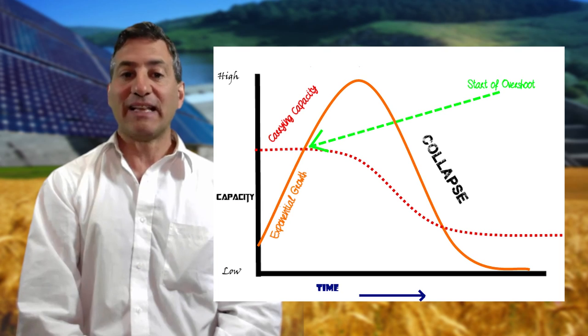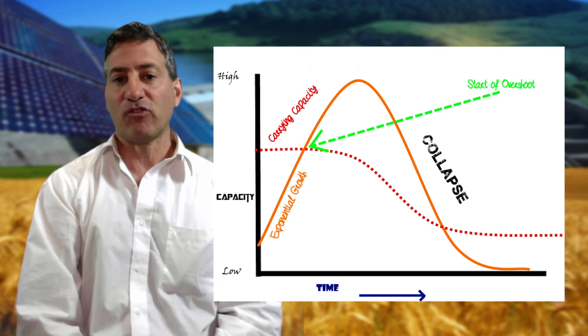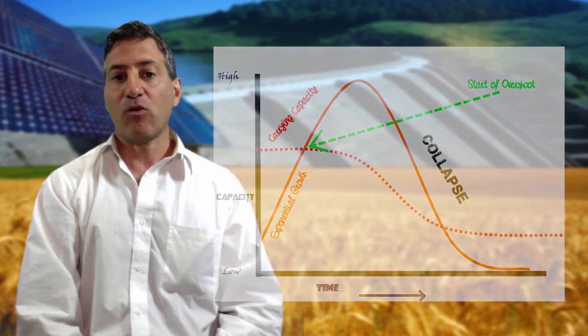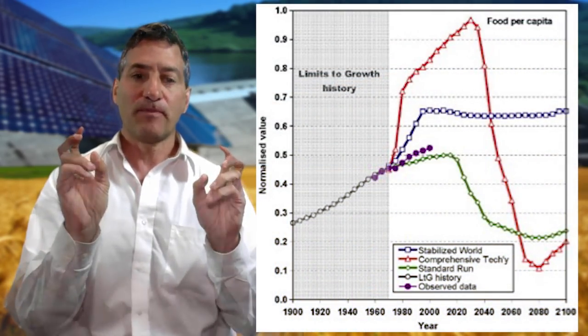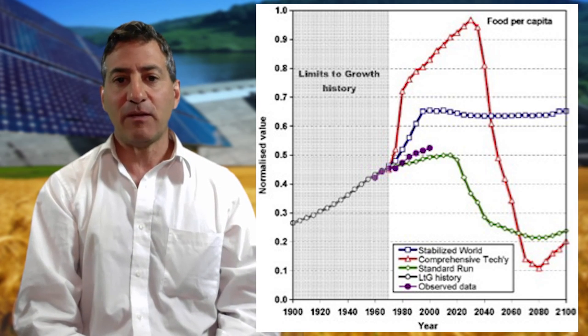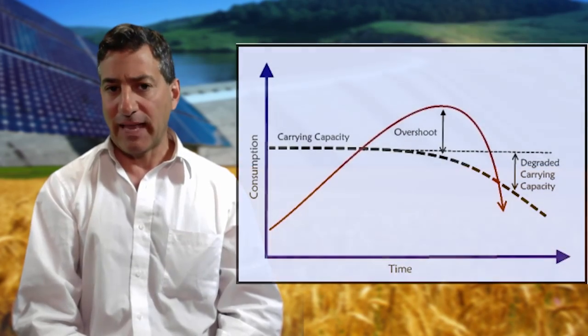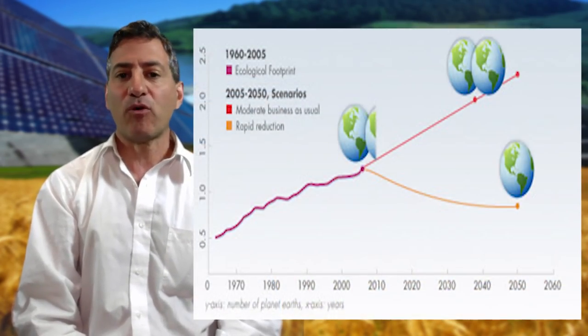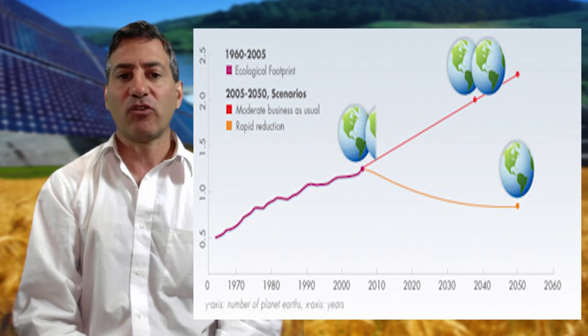Two of the scenarios saw overshoot and collapse of the global system by the mid to latter part of the 21st century, while a third scenario resulted in a stabilized world. The nexus approach helps us create those sustainability feedback patterns to avoid overshoot and collapse, and the ecological footprint gives us an idea of when we approach the edges of overshoot so that we don't blunder into collapse.